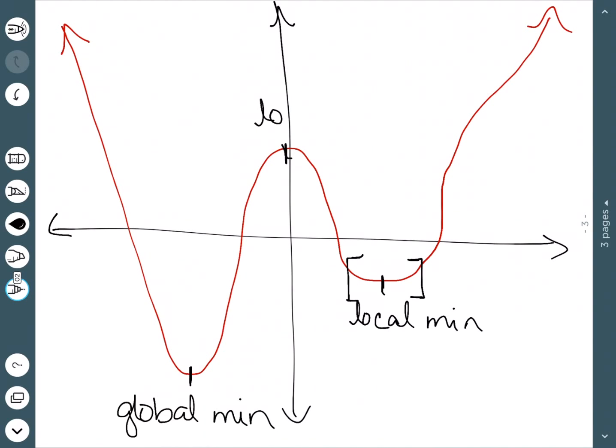This point is a local maximum because once again if I restrict myself to a small portion of the graph, it is the maximum. This one actually does not have a global maximum because you can see that they are just going to increase forever, so there is never an actual max point.